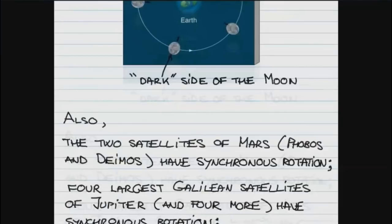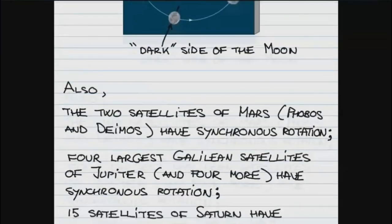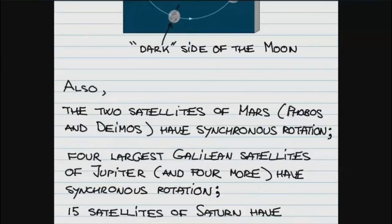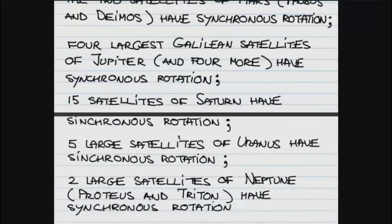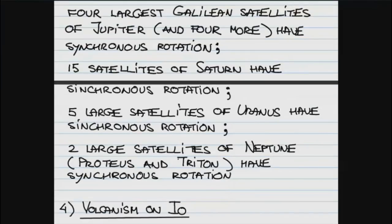Throughout the solar system, the two satellites of Mars — Phobos and Deimos — also have synchronous rotation, always showing the same face to Mars. The four largest satellites of Jupiter, the Galilean satellites — first observed by Galileo — plus four more smaller ones, also have synchronous rotation, always pointing the same face to Jupiter. Fifteen satellites of Saturn have synchronous rotation, and two large satellites of Neptune — Proteus and Triton — also have synchronous rotation. So tidal forces are responsible for the observed synchronous rotation of larger satellites and some smaller ones in the solar system.